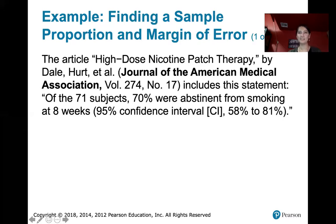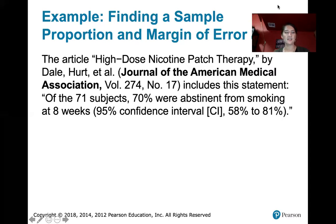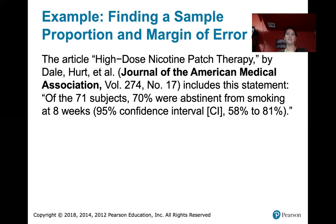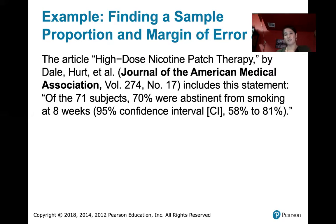Let's look at an example. The article 'High Dose Nicotine Patch Therapy' by Dale Hurt et al. in the Journal of the American Medical Association includes this statement: of the 71 subjects, 70 percent were abstinent from smoking for eight weeks, and they gave a 95 percent confidence interval with a true range of values from 58 percent to 81 percent.